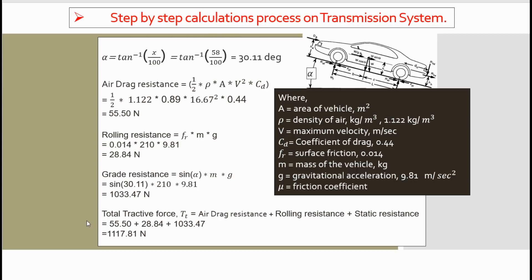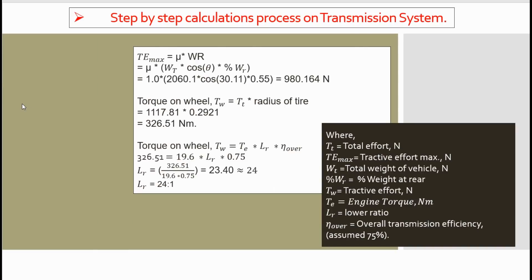After that we calculate maximum tractive force, which depends on maximum grip. Maximum tractive force equals friction coefficient times weight of your vehicle times cos(alpha) — using the angle we calculated previously — times the percentage of rear weight. As per our weight distribution, 55% of weight is at the rear, so we use 0.55. We have got a maximum tractive force of 980.16 Newtons.